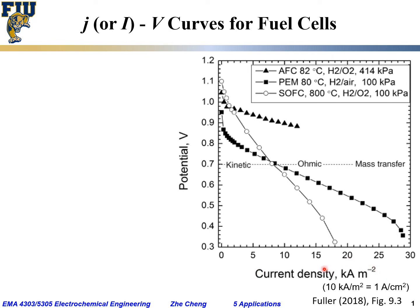As the fuel cell is discharged and chemical energy is converted into electrical energy with higher and higher current density, the cell terminal voltage drops. For two of the cases, the overall potential drops to very low values, for example a cutoff voltage of 0.3 volts. So regardless of fuel cell type, they all start from roughly the same open circuit voltage and decrease with increasing current density.